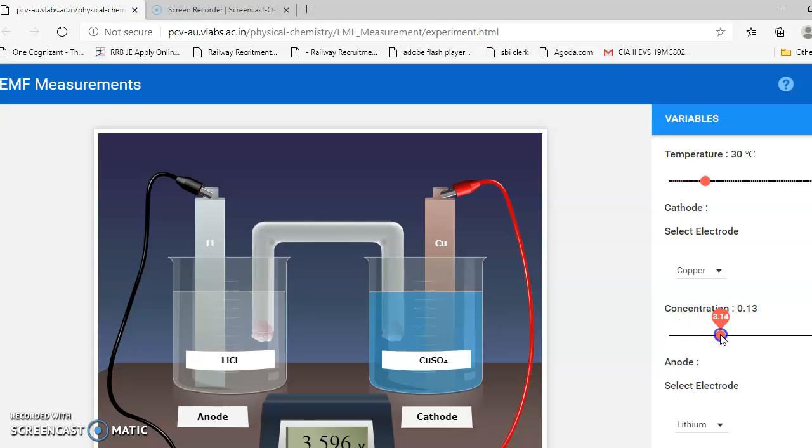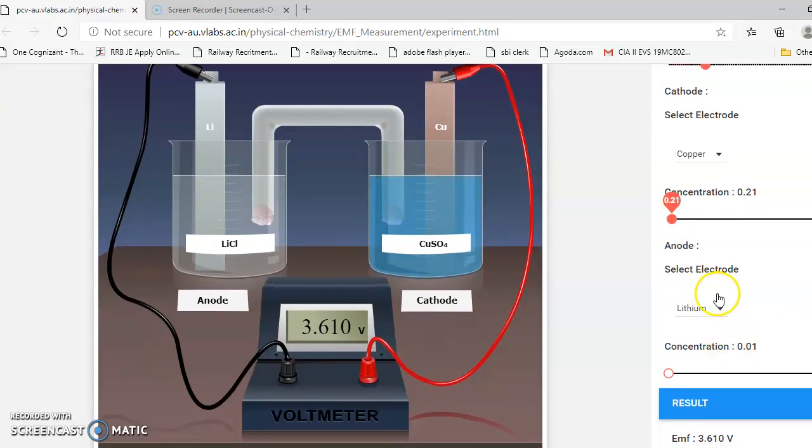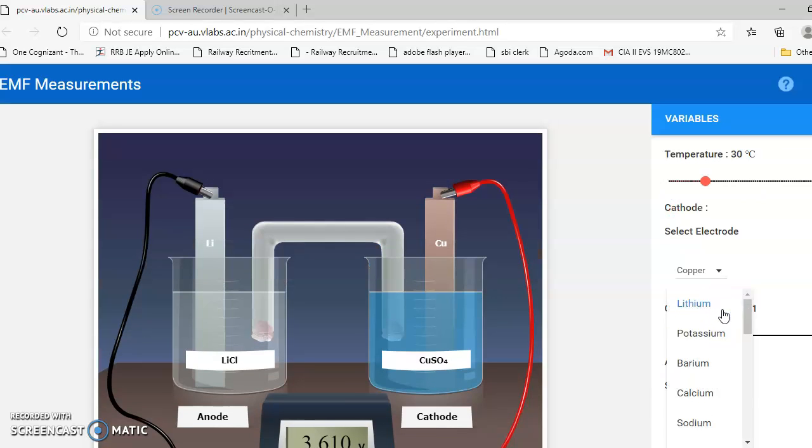Then move on to the anode. Since copper is on the right side, I prefer zinc to be on the left-hand side, so I'm choosing anode to be zinc. Zinc and zinc sulfate will be on the anodic half-cell. Now the anodic half-cell as well as cathodic half-cell are ready.